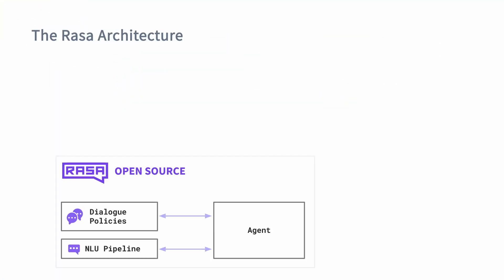So let's talk about the different parts of the Rasa architecture. In the core, we've got our NLU pipeline that predicts entities and intents. There's also our dialogue policies that predict the next action in the conversation. These two components communicate with an agent. The job of the agent is to communicate with different components and make sure that they interact properly. The architecture diagram of Rasa is a fair bit bigger, though, than just these Rasa open source elements.